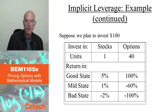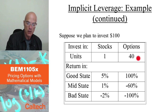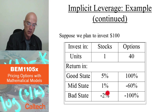Continuing that example: we invest $100, which is either one stock or 40 options. The stock went to $105 — that's a 5% profit in the good state. In the intermediate state, it went to $101, so 1% gain. In the bad state, it went to $98, so a loss of 2%.